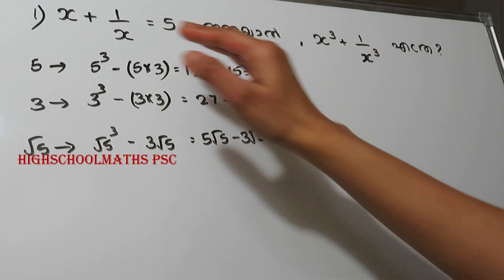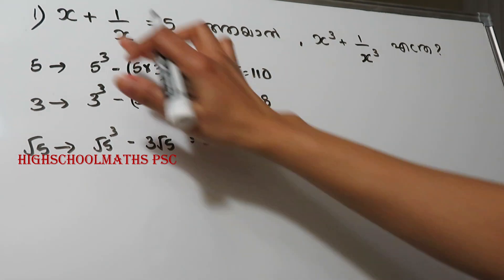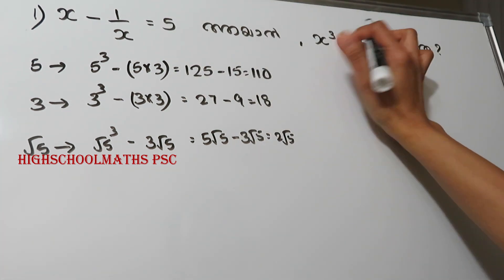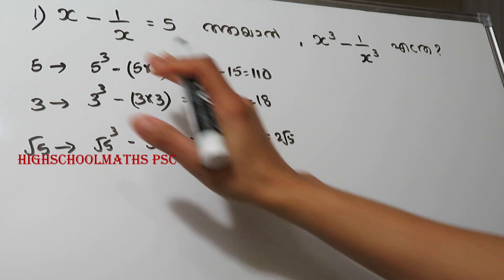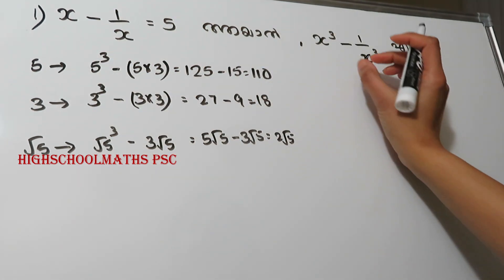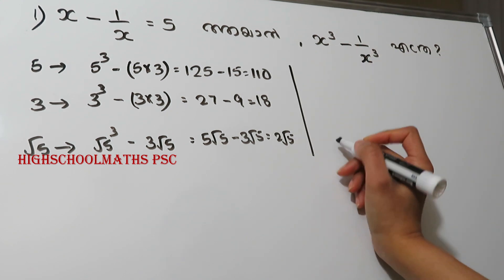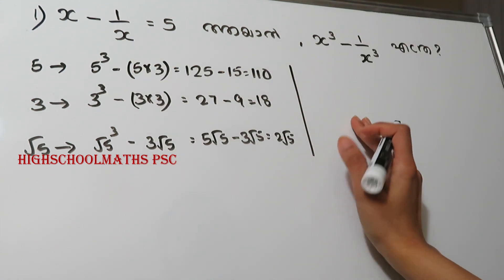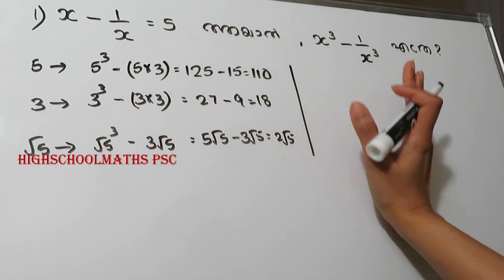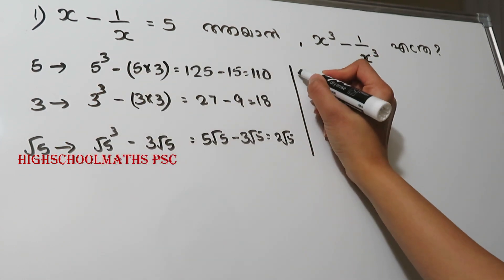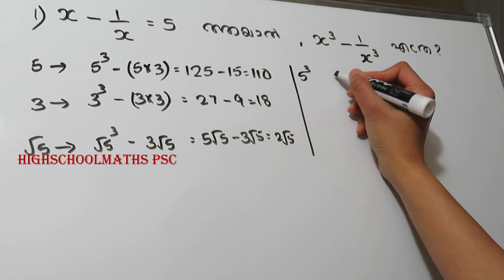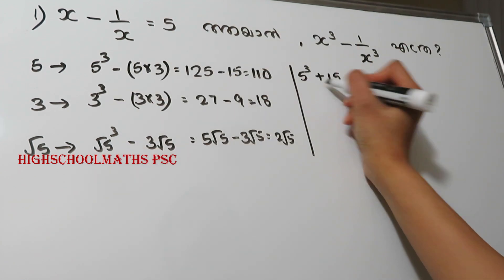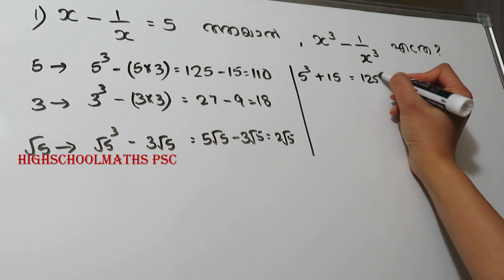What we have discussed here involves a plus symbol. What we have discussed here is x minus 1 by x value 5. The value is x-cubed minus 1 by x-cubed. If x minus 1 by x is equal to 5, then find the value of x-cubed minus 1 by x-cubed. What we have discussed here is a positive value, and what we have said here is a minus. This value is a method. This symbol will be plus. This value is 5. Here is 125 plus 15.